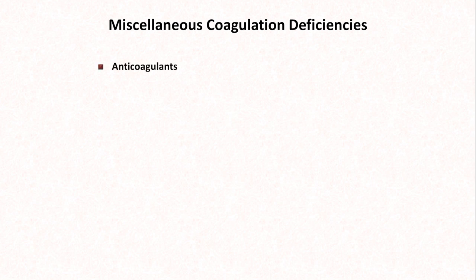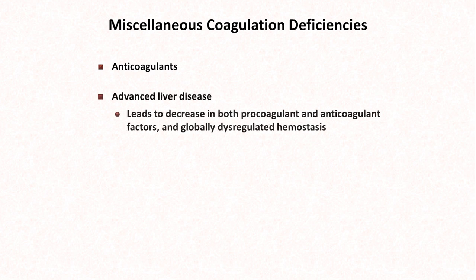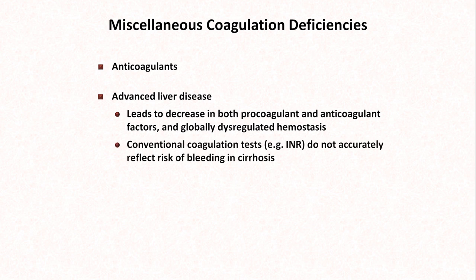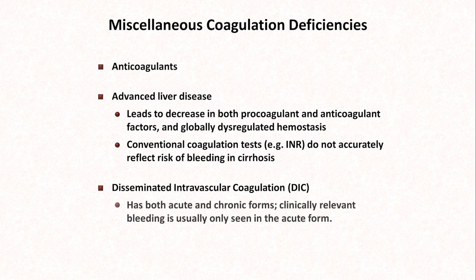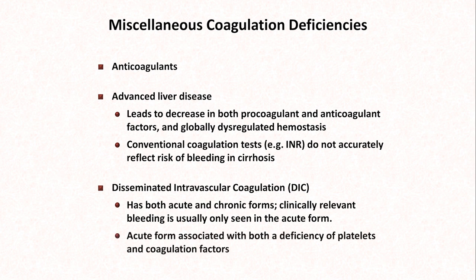There are also some miscellaneous coagulation deficiencies discussed earlier in this series. These include anticoagulant use, advanced liver disease — which leads to a decrease in both procoagulant and anticoagulant factors and globally dysregulated hemostasis — and conventional coagulation tests such as the INR, which do not accurately reflect the risk of bleeding in cirrhosis, though INR is a marker of the severity of liver disease. Finally, disseminated intravascular coagulation has both acute and chronic forms, though clinically relevant bleeding is usually only seen in the acute form, which is associated with a deficiency of both platelets and coagulation factors.